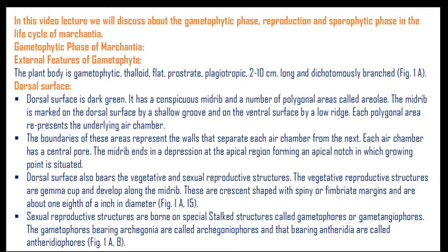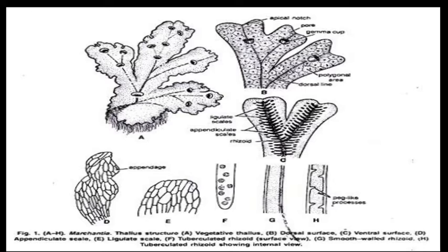The sexual reproductive structures are borne on special stalk structures called gametophores or gametangiophores. The gametophores bearing archegonia are called archegoniophores. The dorsal view diagrams A and B of Marchantia show that at the central location there is the main midrib, on which gemma cups develop, and at the terminal end of each thallus there is an apical notch representing dichotomous branching. Polygonal areas are also found on the dorsal surface.